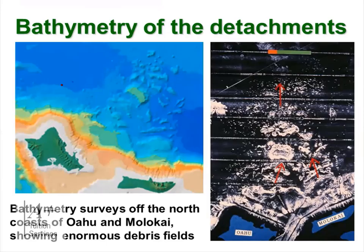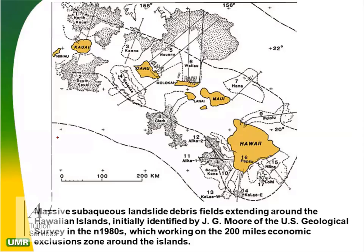Bathymetry surveys off the north coast of Oahu and Molokai show enormous debris fields where material detached, leaving a steady mountainous landmass. Massive sub-aqueous landslide debris fields extend around the Hawaiian Islands, initially identified by J.G. Moore from the U.S. Geological Survey. Hawaii, Maui, Oahu, and Kauai were all once part of the general landmass and detached due to plate movements.